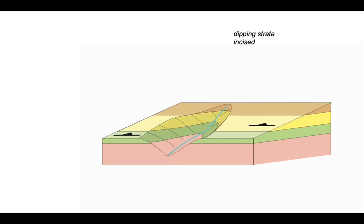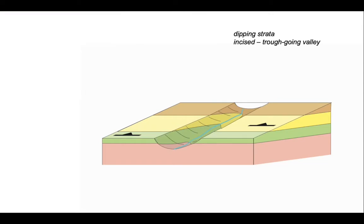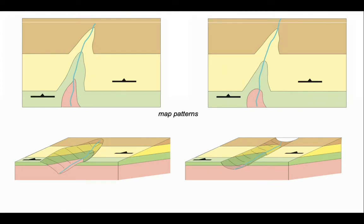We can incise this landscape by cutting a valley into it and think about what the map pattern is. The incision with a valley and its stream running along creates a V shape in the outcrop pattern. We can change the shape of the valley and make it more through-going, cutting right across the model — it still creates this V-type shape in the outcrop of the geological boundaries. This allows us to infer the direction of dip from the behaviour of layers as they cross valleys. The inclined layers V into the valley bottoms and the closure of the V points in the direction of dip. This is an important concept called V-ing in valleys, and it gives the dip direction of the strata.